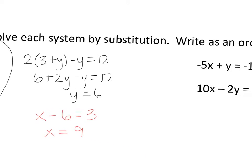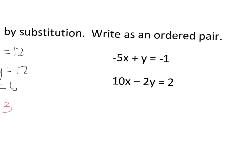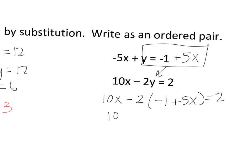And this other one is solved by substitution. So I want to solve for y. I'm going to add 5x. Sub it in right here. So it's 10x minus 2 times the quantity negative 1 plus 5x equals 2. So 10x plus 2 minus 10x equals 2. So these x's will cancel out, and you get 2 equal 2.